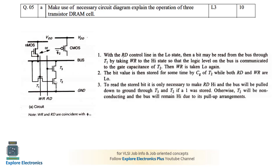If we get 0 from the bus it means we are reading 1 — it is inverted. Similarly, if 0 is stored and we are trying to read, RD is 1, T3 is on, but T2 will be off, so the bus does not get a direct connection to ground. The bus will have some positive value, and the sense amplifier will detect that and treat it as logic 1. This is how write and read operations are performed using three transistors in a DRAM cell.